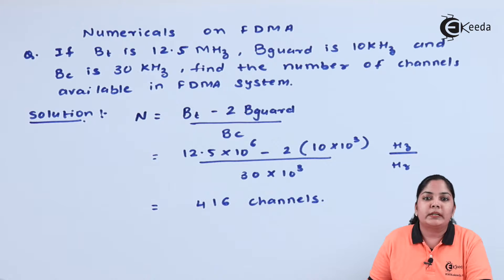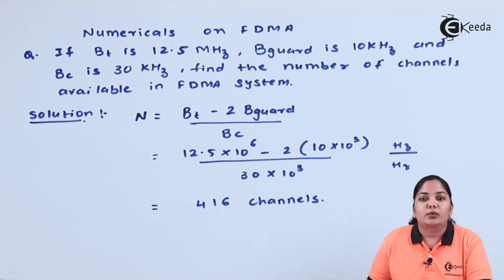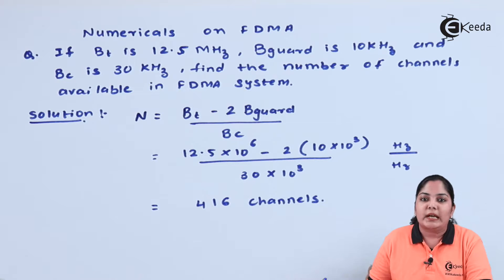Since the numerator is in hertz and the denominator is also in hertz, they cancel and we get a dimensionless quantity — just a number — and this is the number of channels that the entire system provides us.